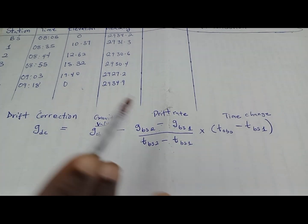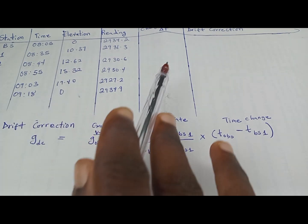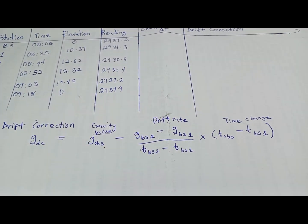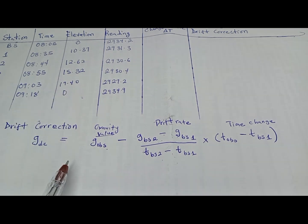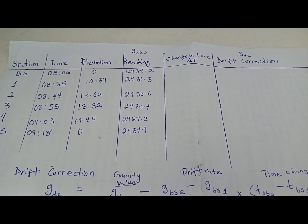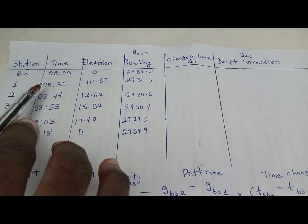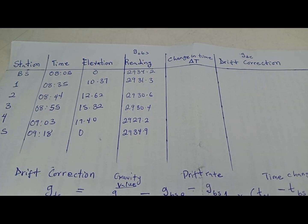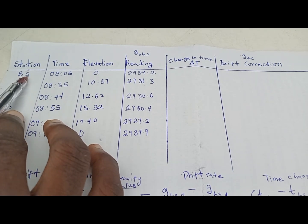When you are given this reading, the first thing you need to look for is the change in time. We are going to calculate it for all readings. For the change in time, it is very simple — for each station you subtract the time for base station one, which is the first base station reading at 8:05.